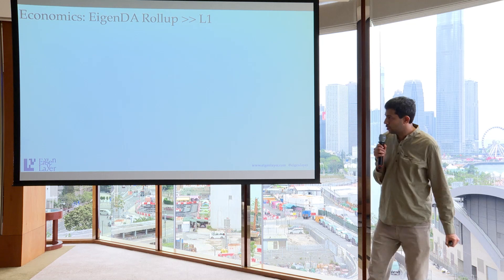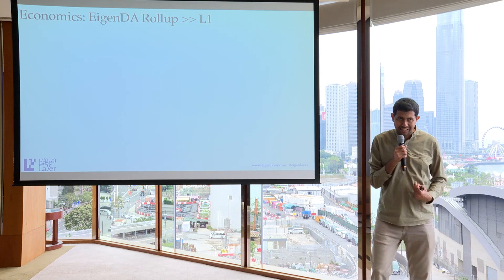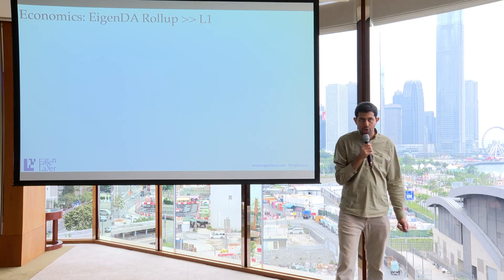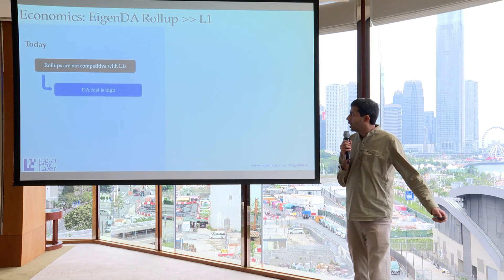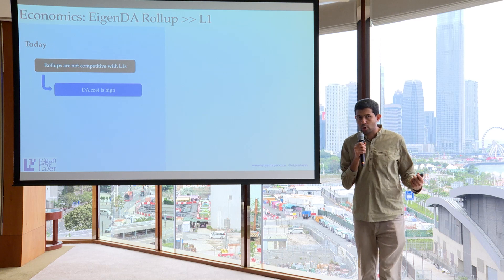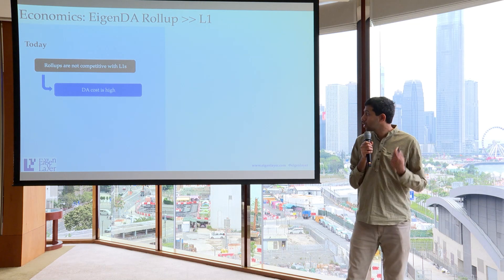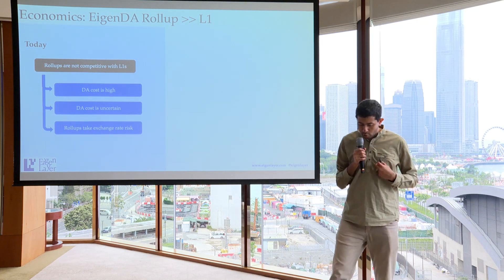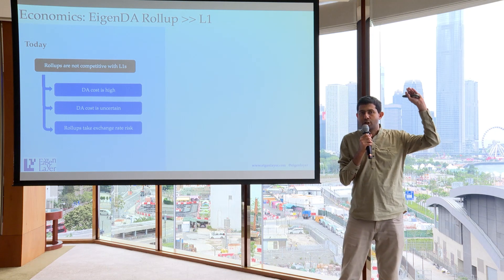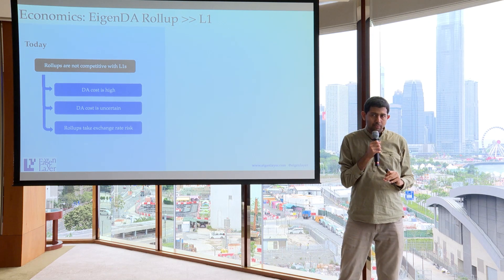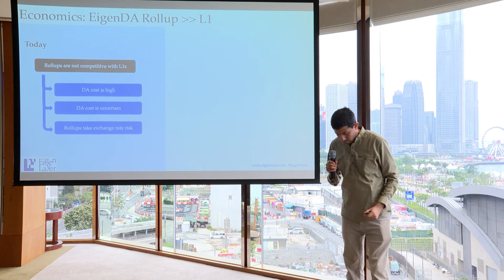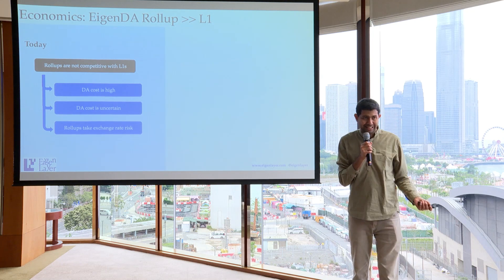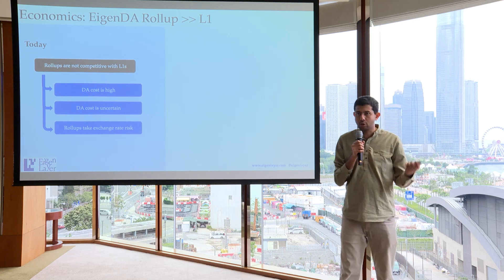On economics: how do you make sure that the rollup's economics are actually competitive? When you think about a layer one, there are attractive features. On a rollup, the data availability costs are high and erratic — they keep changing. If you're a rollup, unlike a layer one, you have a fixed fraction inflation to support your validators. If you're using some other data availability system — Ethereum or anything else — you're taking an exchange rate risk between your own token and ETH, or whatever else you have to pay with.